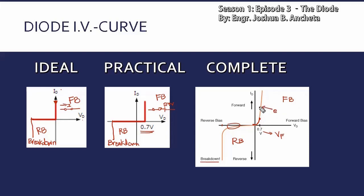Pag na-reach na yung tinatawag na forward voltage, magkakaroon ng exponential increase in the current — tataas ng tataas yung current exponentially. Ibig sabihin, na-reach niya na yung tinatawag na knee point — tinatawag din yan knee point, kaya nga minsan ang pangalan dyan ay VK or the knee voltage. So this is during forward bias condition wherein ang diode natin equivalent sa closed switch, battery 0.7, and small internal resistance.